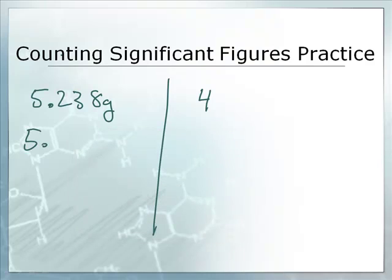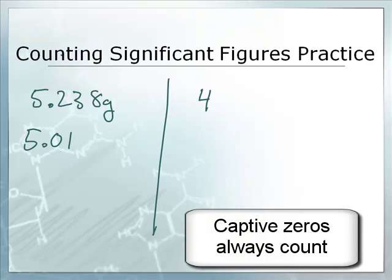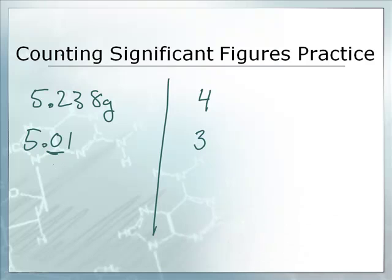What if I have 5.01? That's a captive zero. It's captured between non-zero digits, so that's always significant. So that's three significant figures: the 5, the 0, and the 1.